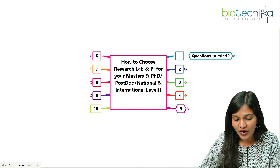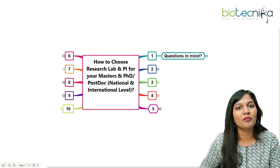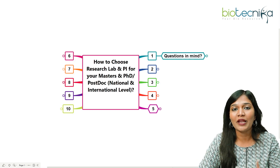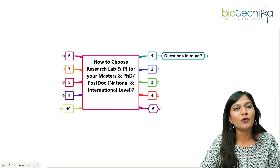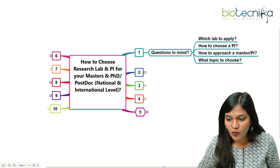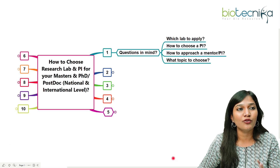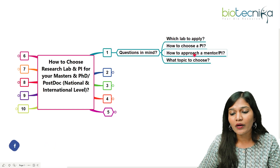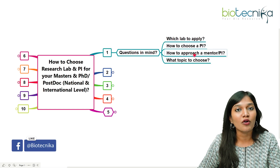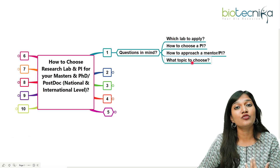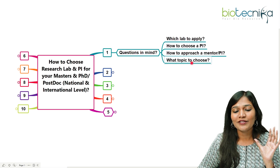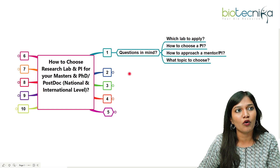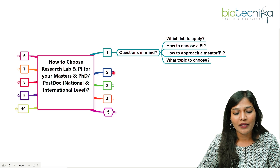First, let's talk about what you have to do initially when you're going to start off your PhD, find a master's project guide, or start your postdoc. Some questions you might have: which lab do I apply to? How do I choose the exact PI matching my research interest? How do I approach a mentor or PI, contact them, and what topics should I choose for my research? If you have these questions, the next 10 to 15 minutes will be very important, and I'm going to share tips to help you find a very good PI and research lab.